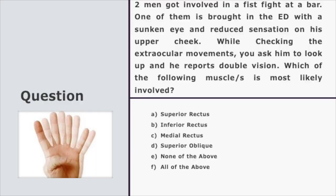Before we begin, let us start with a question scenario. Two people are involved in a fight in a bar. One of them is brought into the emergency department with a sunken eye and reduced sensation on his upper cheek. While checking the extraocular movements, you ask him to look up and he reports double vision. Which of the following muscle or muscles is most likely involved: superior rectus, inferior rectus, medial rectus, superior oblique, none of the above, or all of the above? Take a moment to think about the answer; we'll come back to this question as we move along.